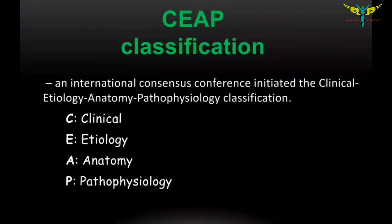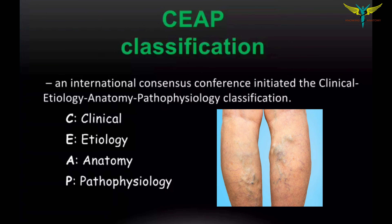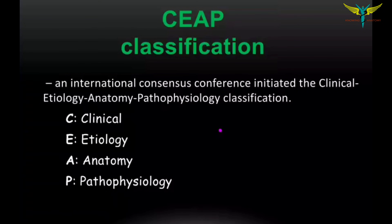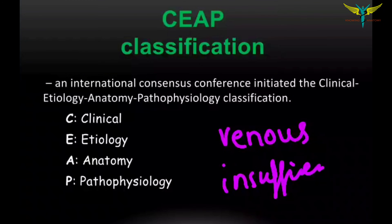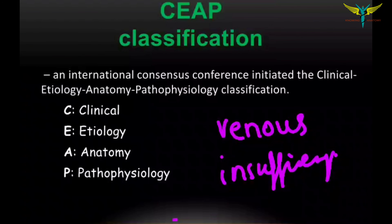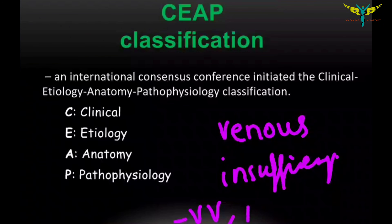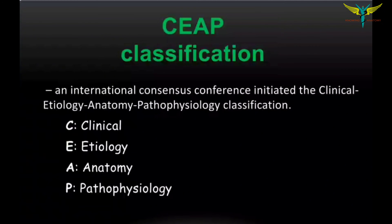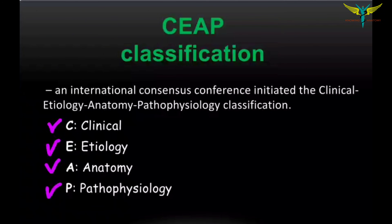In this video we will be learning about CEAP classification. This classification is mainly used in cases of venous insufficiency, like in the cases of varicose veins or in the diseases of the perforator veins of the lower limb. CEAP is an international classification in which C stands for clinical, E stands for etiology, A stands for anatomy, and P stands for pathophysiology.